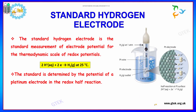Now we will talk about the Standard Hydrogen Electrode. It is a standard measurement of electrode potential for the thermodynamic scale of redox electrode potentials, used to identify whether an electrode is good or not. The standard is determined by the potential of a platinum electrode in a redox half-reaction, where hydrogen is added and an electron is emitted to form hydrogen gas at 25°C. This is how the electrode is evaluated, and it is referred to as the Standard Hydrogen Electrode.